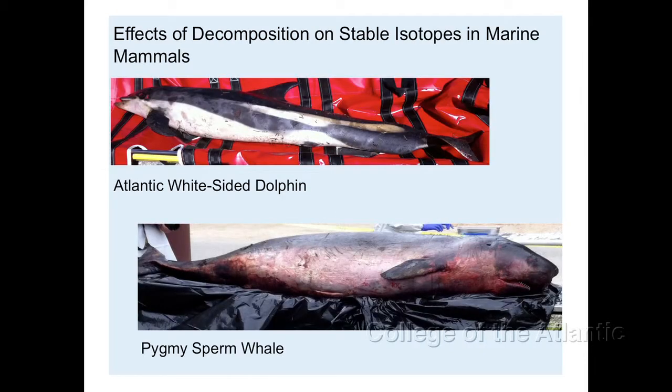When I was first learning about stable isotope analysis, I read a lot of marine mammal studies. This is because you only need a very small sample of tissue to get a stable isotopic signature. So whenever an animal breaches or surfaces, you can get a biopsy and have that analyzed and learn all kinds of information about it.